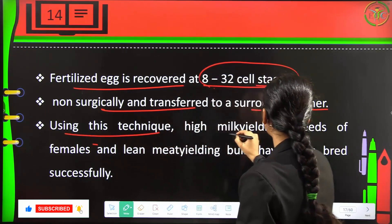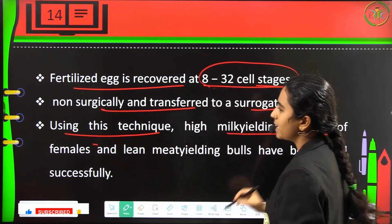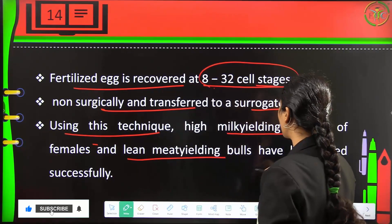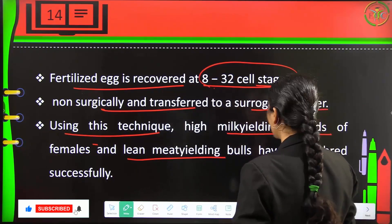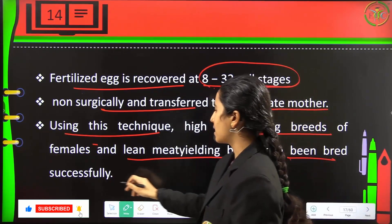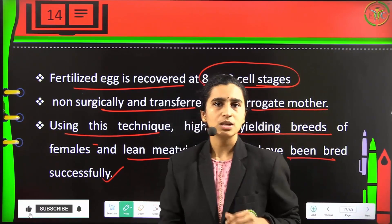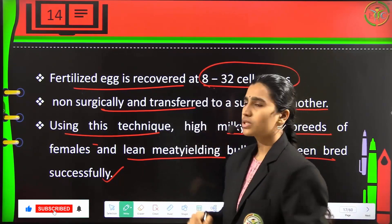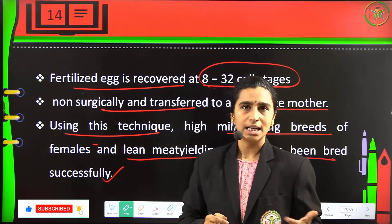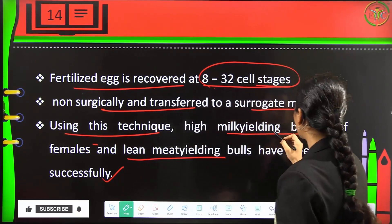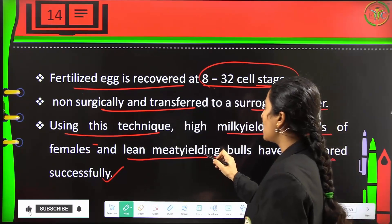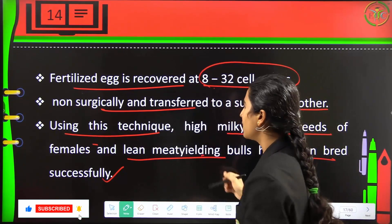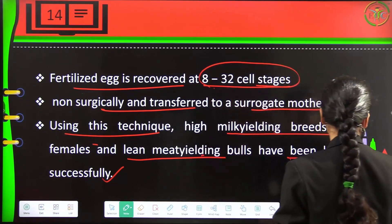Using this MOET technique, high milk-yielding breeds of females and lean meat-yielding bulls have been bred successfully.